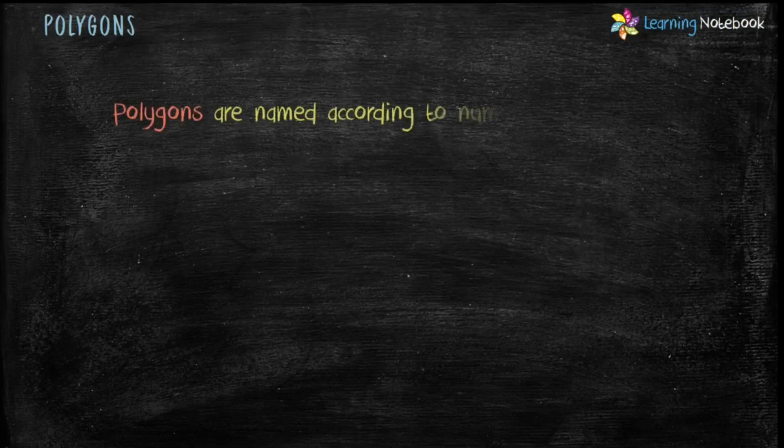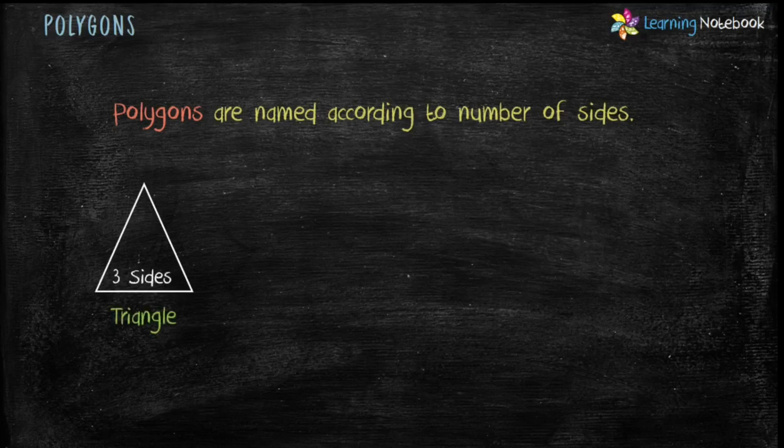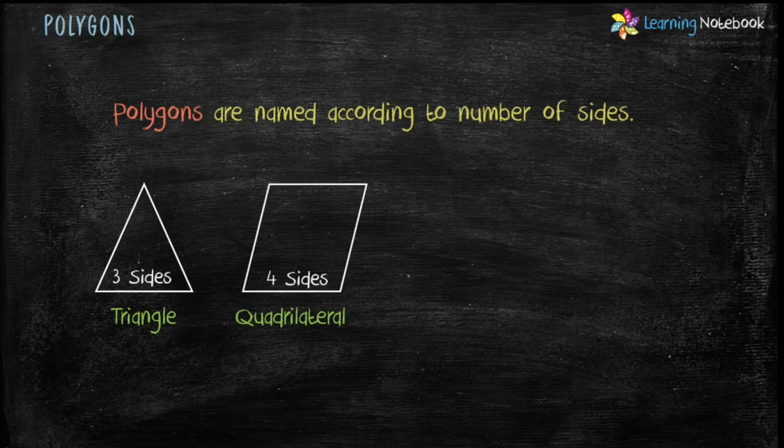Polygons are named according to number of sides. A polygon with three sides is called a triangle. A polygon with four sides is called quadrilateral. Students, square and rectangle are examples of quadrilaterals.